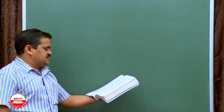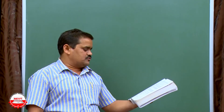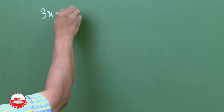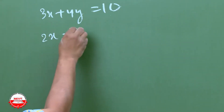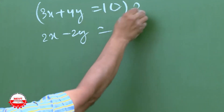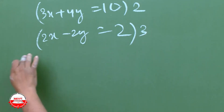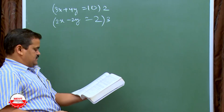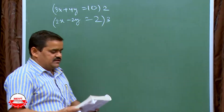For the second part of Q1: 3X plus 4Y is equal to 10 and 2X minus 2Y is equal to 2. Multiply the first equation by 2 to get 6X plus 8Y equals 20, and multiply the second by 3 to get 6X minus 6Y equals 6. Then eliminate X and find Y. The third and fourth parts follow the same approach.